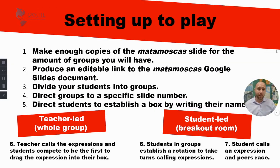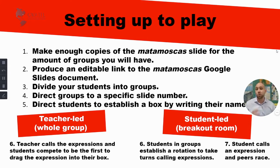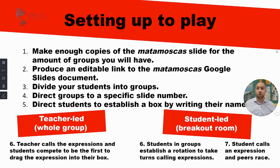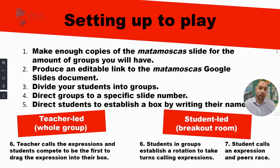I want to show you how we set ourselves up - this may look complicated but I promise you it's not and it's totally worth it. The first thing you want to do is make enough copies of the Matamoskas template for the number of groups you're going to have. So if you have 24 students working in pairs, you'll make 12 different copies of the Matamoskas slide. If you have 24 students working in groups of four, you'll make six copies of that slide.